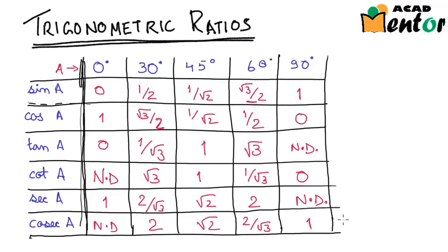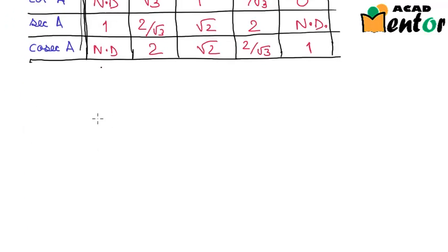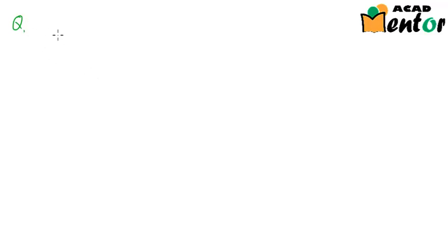So this is the table, and you can see that it is pretty easy to get it only if we know the values of sin A for these angles. Now let's look at a few examples where we can use these values. Suppose we are given a task of erecting a pole which is 5 meters in length such that it has to be supported by a wire which forms an angle of 30 degrees with the ground. Let me draw a figure for you.